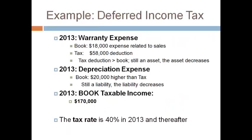Let's use the information related to 2013 to record income taxes. The company has the same two book-tax differences. The amount reported on the income statement is different than the amount recorded on the tax return. Warranty expense started out as an asset and it will remain an asset until the difference is totally eliminated. Depreciation expense started out as a liability and it will remain a liability until the difference is totally eliminated. Income before tax recorded on the income statement is $170,000. Items reported on the income statement are referred to as book. The tax rate has increased to 40%.